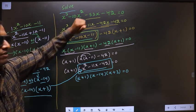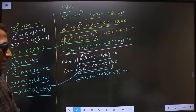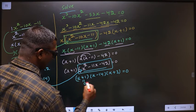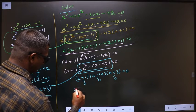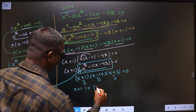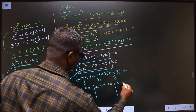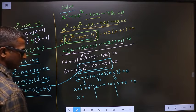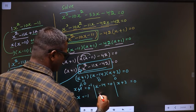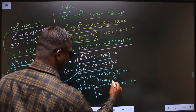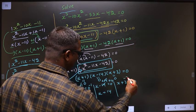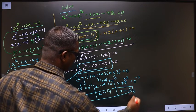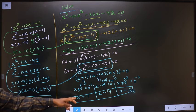They told us to solve, means we need to find the values for x. Here this bracket product equals 0. So to get the values for x, equate each bracket to 0. That is x plus 1 equal to 0, x minus 14 equal to 0, x plus 3 equal to 0. So to get x, subtract 1 on both sides: x is minus 1. Add 14 on both sides: x is 14. Subtract 3 on both sides: x is minus 3. These are the values for x. This is our answer.